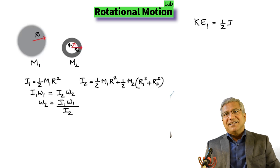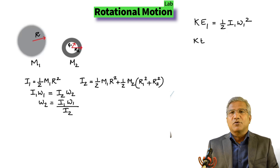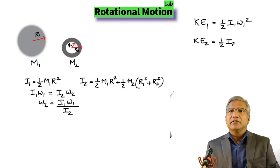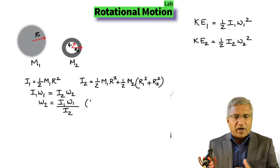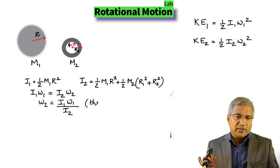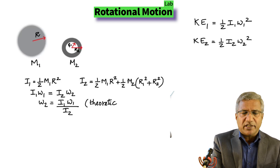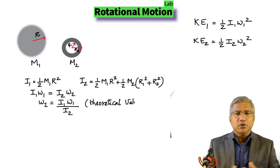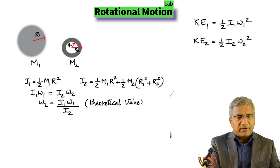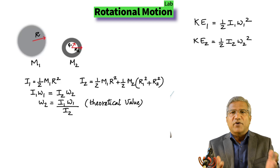Kinetic energy is the energy of motion, and in rotation it's given by one-half I1 omega-1 squared for the first case, and one-half I2 omega-2 squared for the second case. It's easy to calculate the kinetic energy knowing the values of I1, omega-1, I2, and omega-2, because now we have theoretically calculated omega-2.